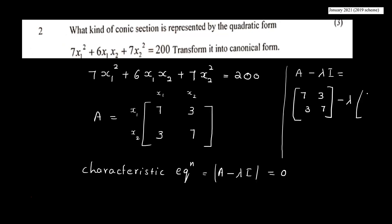Since A is a 2×2 matrix, we use a 2×2 identity matrix. The characteristic equation is A minus lambda I equal to zero. That gives us the determinant: (7 − λ), 3, 3, (7 − λ).